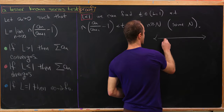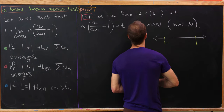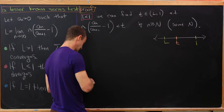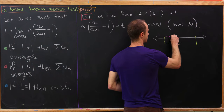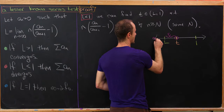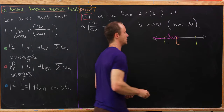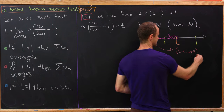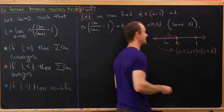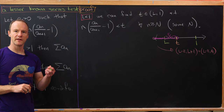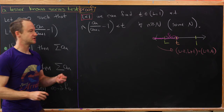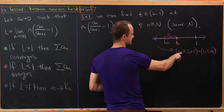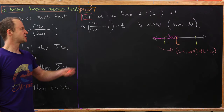Consider a number line with l on the left and one on the right. Choose t between them and define epsilon to be the difference between l and t. This creates an epsilon bubble around l of the form (l minus epsilon, l plus epsilon), which in this case is (l minus epsilon, t). By the definition of the limit, for all epsilon we can find a capital N such that the terms of our sequence land in this epsilon neighborhood of l, meaning they'll be less than t.